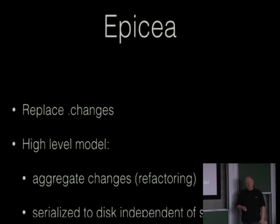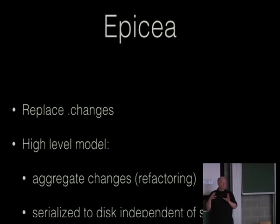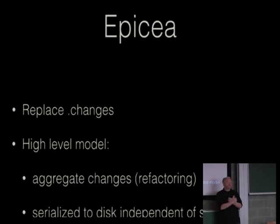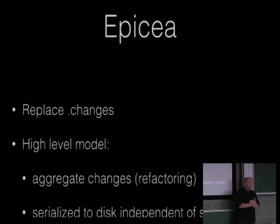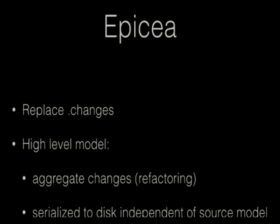The first step of that is we need to replace the mechanism of .changes, because .changes serves two purposes. It stores the source code like the .sources, and it's a log of what you do so that if your system crashes you always have a transaction log of the code that you wrote so that you can never lose code. And for that, Martin was here too, implemented something called EPICEA.